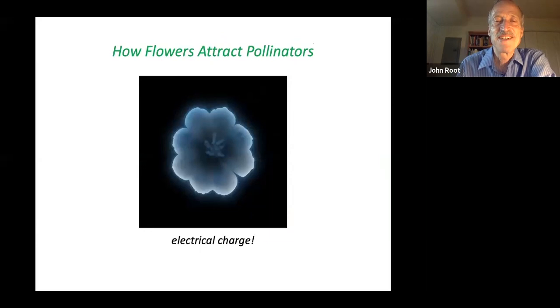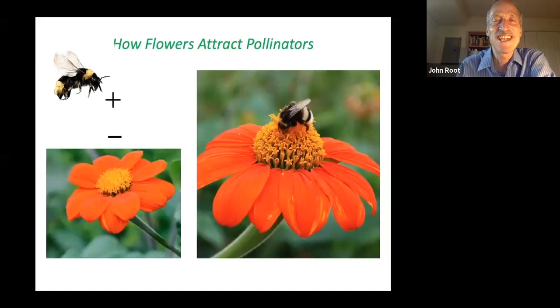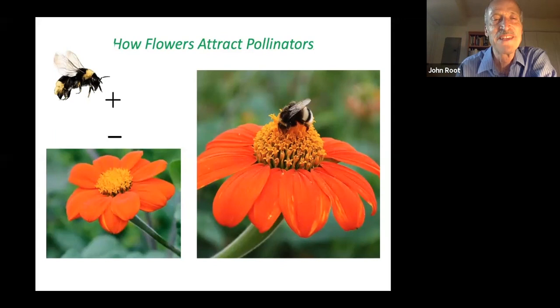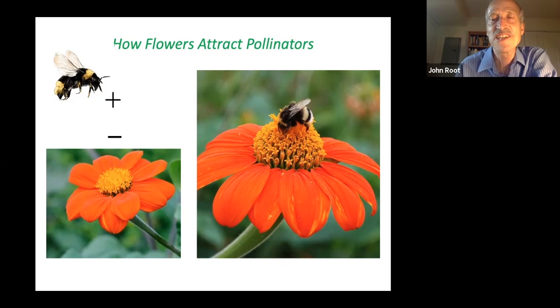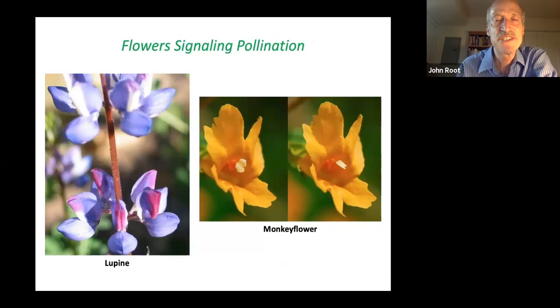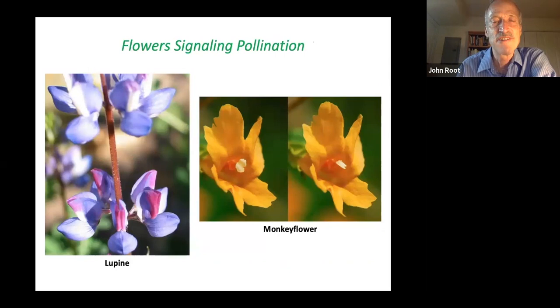Insects can smell flowers just as we can, but we cannot sense the electrical charge on a flower, and yet pollinators actually can sense it. They will preferentially go to a flower that has a negative charge, and bees themselves are somewhat positively charged, which means that when they visit the flower, the pollen will stick to them more readily. Remarkably, there are some flowers that actually advertise 'we've already been pollinated — don't bother coming here for the nectar.' The lupine on the left is one such flower: the red is a sign that those flowers are already pollinated.